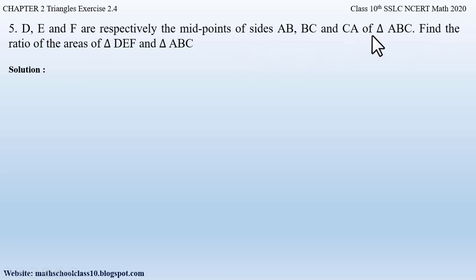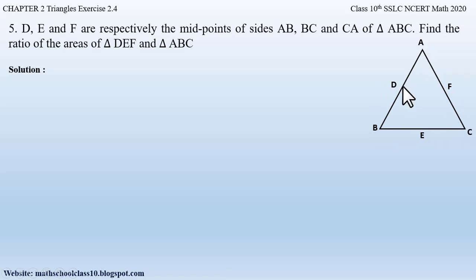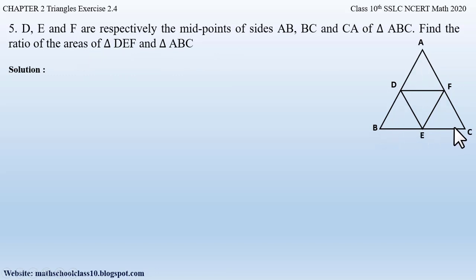We are told there is a triangle ABC, so let us first draw a triangle. D, E, and F are respectively the midpoints of sides AB, BC, and CA. Let us mark points D, E, and F as the midpoints. These midpoints form triangle DEF, and we have to find the ratio of the areas of triangle DEF and triangle ABC.